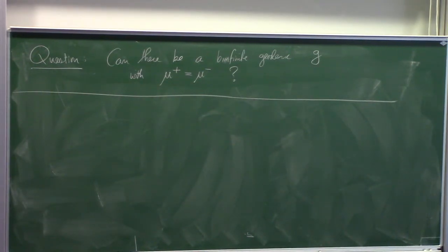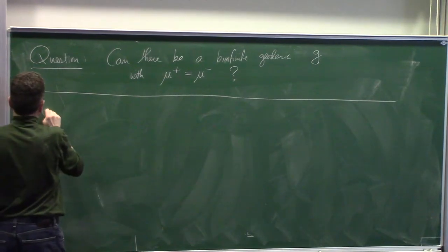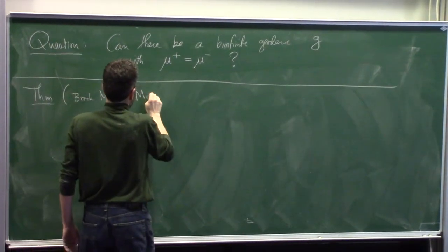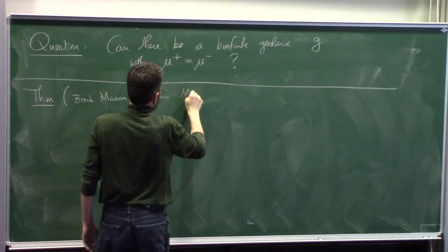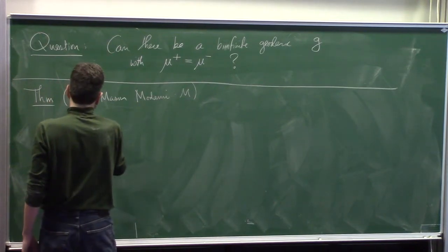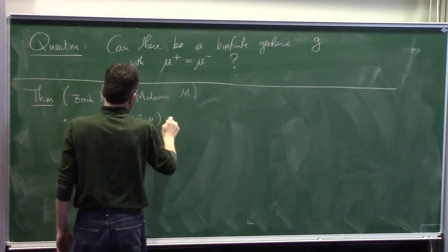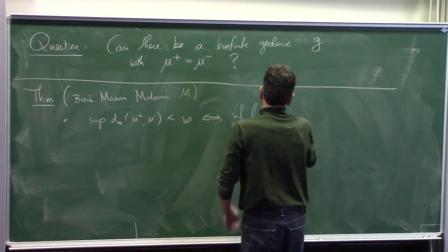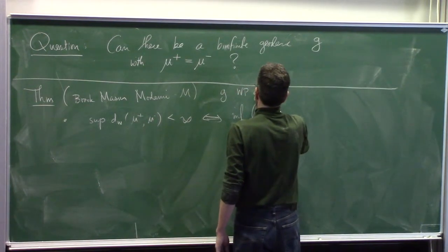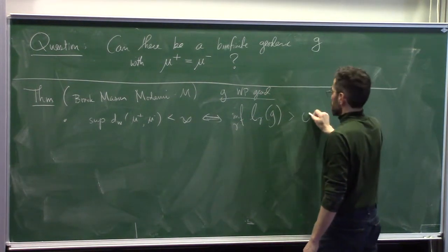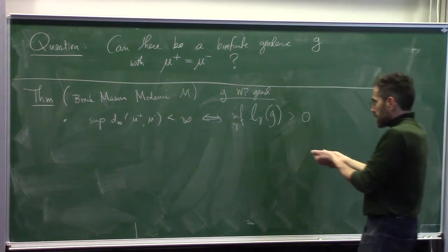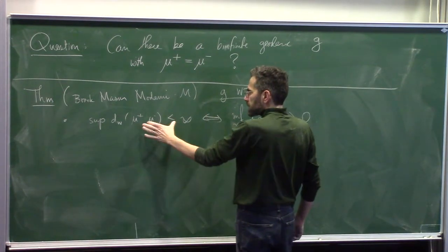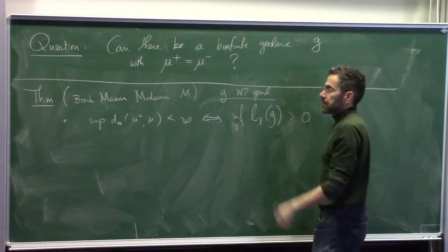How close can we come to Rafi's theorem? This is combined work with Brock and Maser. First: the sup of d_W(μ+, μ-) being finite is equivalent to the infimum of the lengths of curves along the Bay-Peterson geodesic being positive - bounded combinatorics implies bounded geometry and vice versa. At least the class of what are called bounded combinatorics cases is understandable.